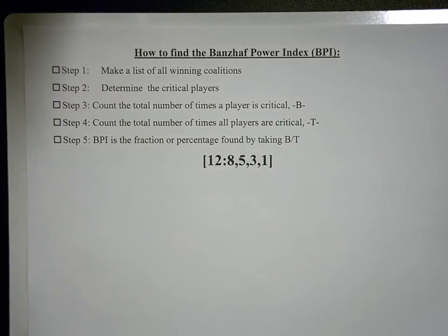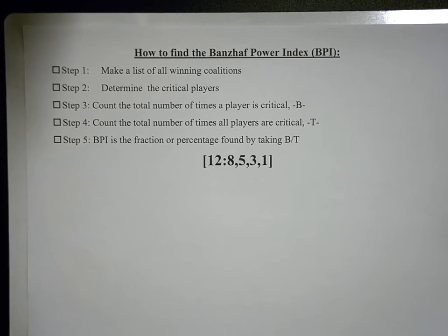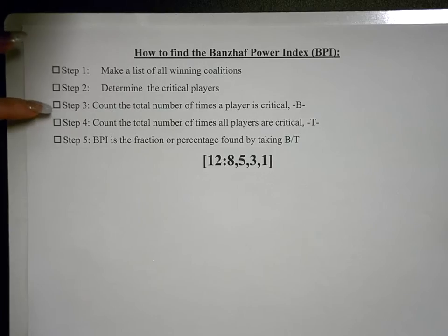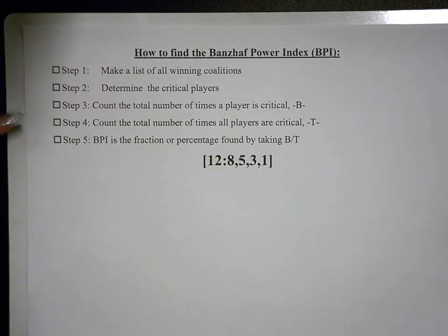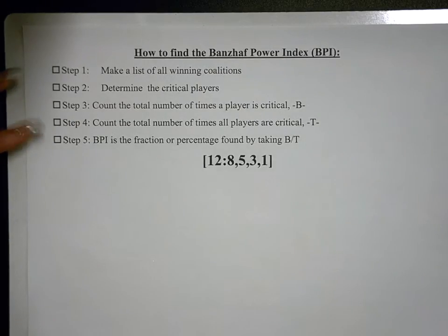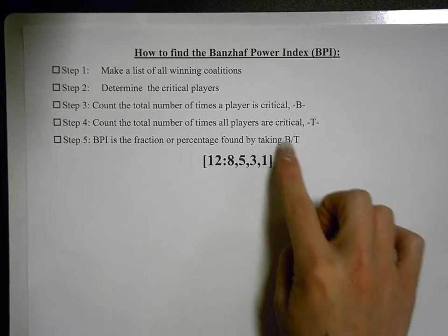We will look at how to find the Banzhaf Power Index, or the BPI, for a particular weighted voting system. It's done in a number of steps. The first step is to make a list of all the winning coalitions. Step two, you determine the critical players. Step three, count the total number of times a player is critical — we use the symbol B for that. After that, count the total number of times all players are critical, and we use the symbol T. The last step is to find the BPI, which is the fraction or percentage found by taking B divided by T.